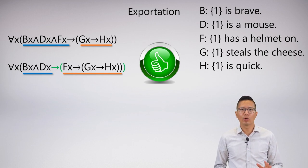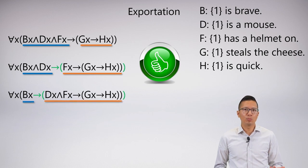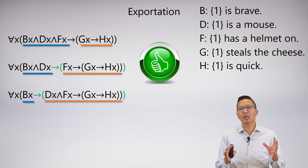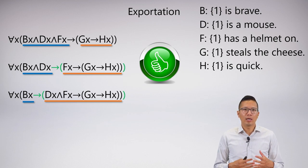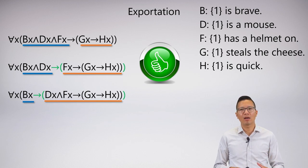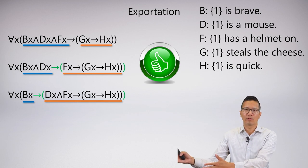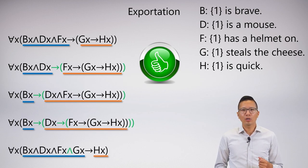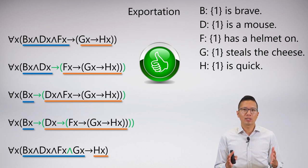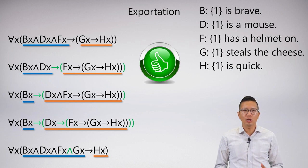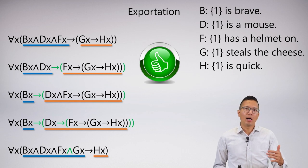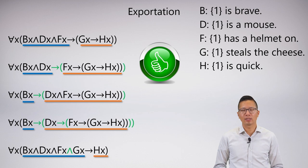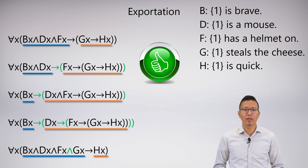These moves you've seen before — there's nothing wrong with this. What makes this different in predicate logic is that when you do these moves, it's like you're seeing the group as something different. For example, you could see the group as just 'brave things' — everything that's brave — and then for anything brave it has the following property. You can also move GX into the antecedent by doing reverse exportation: if you're a brave mouse with a helmet on and you steal the cheese, then you must be quick. I think this last one is actually quite a natural reading, and it would be perfectly fine if you came up with it on your own.